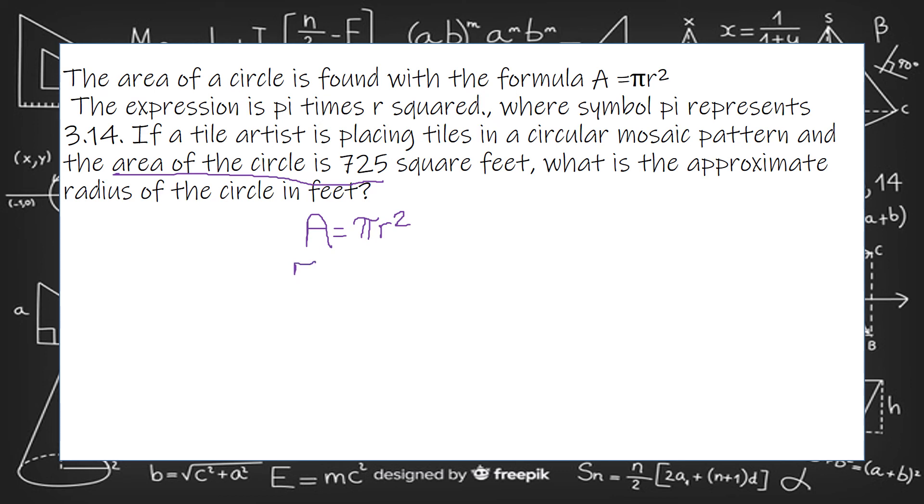So the first thing we're going to do is write out our equation. A equals pi r squared. So then we're going to put in the area. Well, it told us the area of the circle is 725.